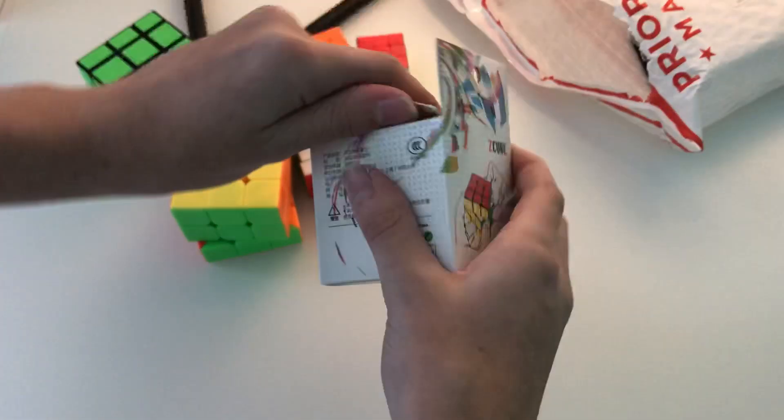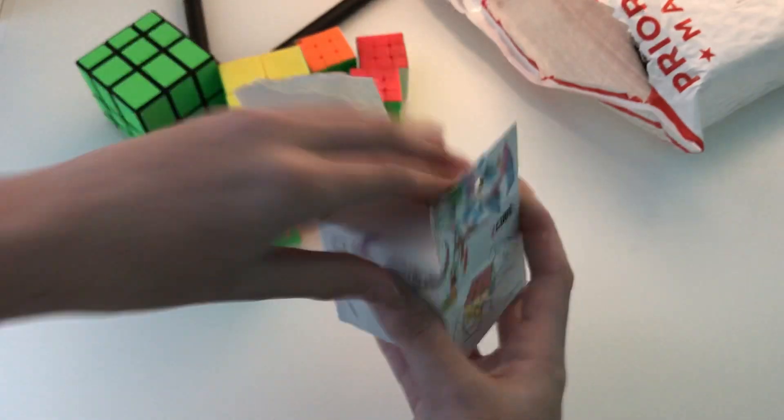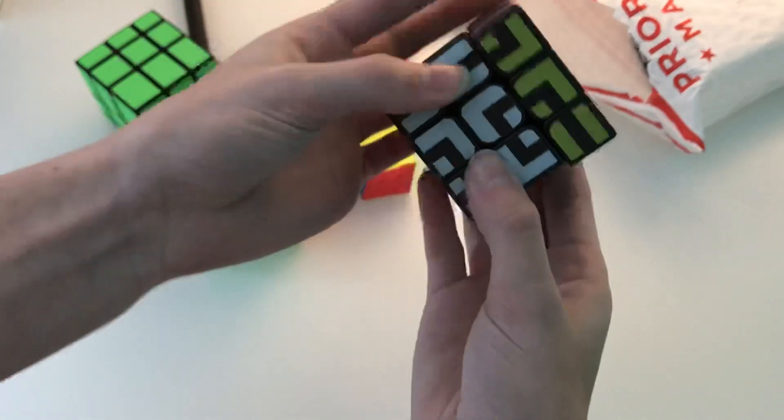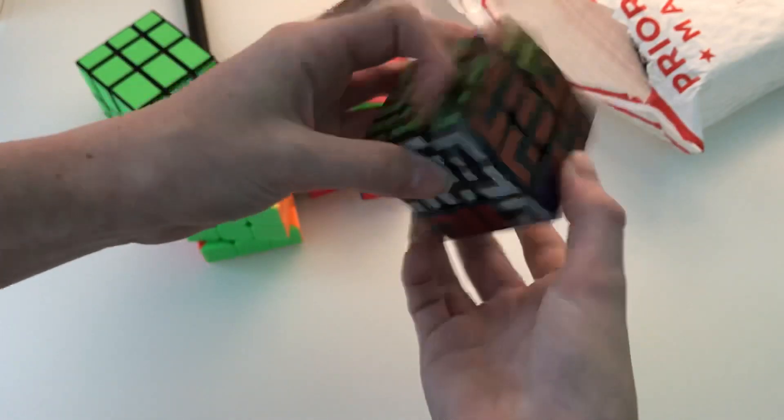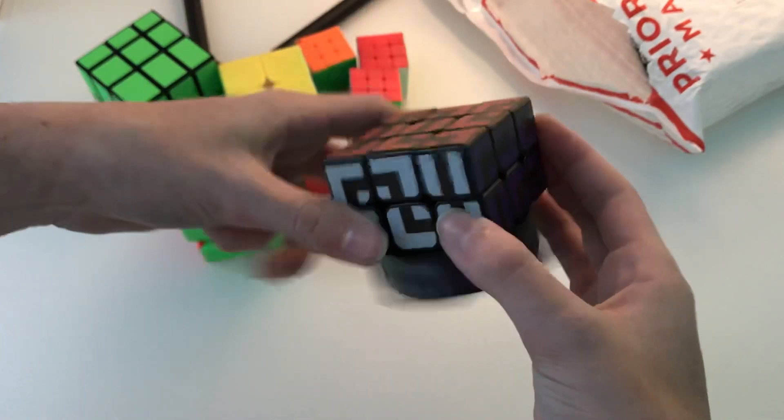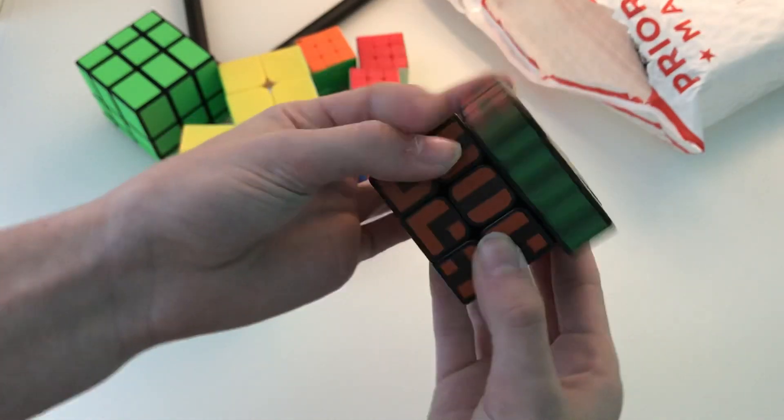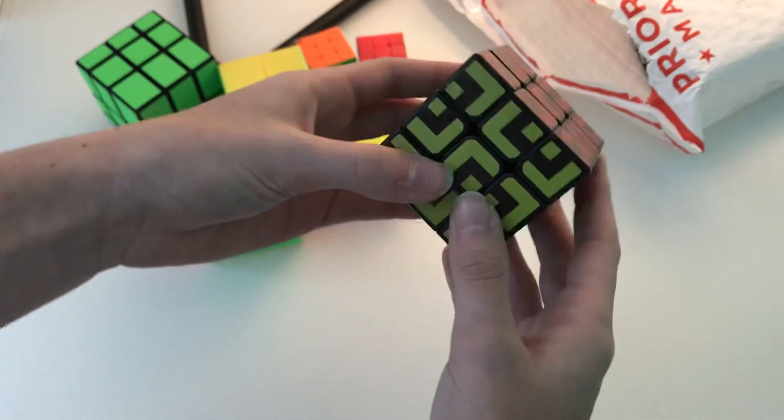Next cube we have here, this is the Z-maze cube, got a lot of stuff from Z I'm realizing. This turns pretty well. It's just a 3x3 sticker mod, I do like it quite a bit, and this is just a fun little cube, not too much to say about it.